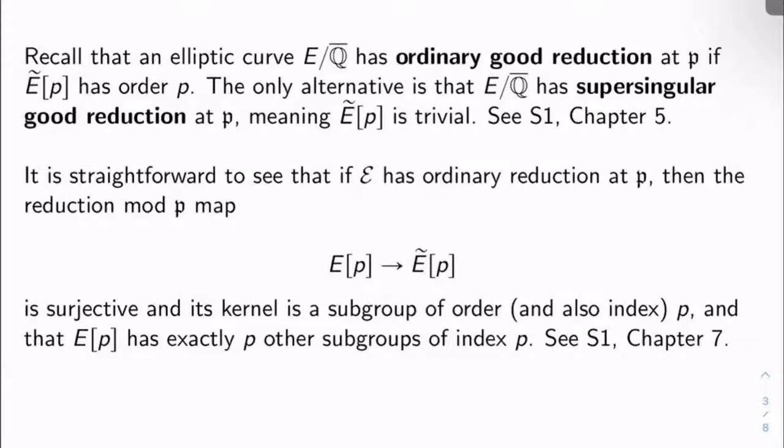The only alternative is that E over Q̄ has what's called supersingular good reduction at ℘, which means the p-torsion of Ẽ is trivial. So check Silverman 1 chapter 5 for details on these terms.